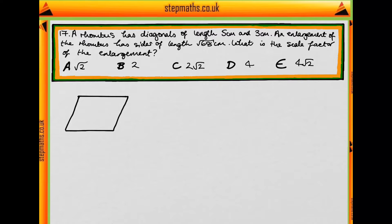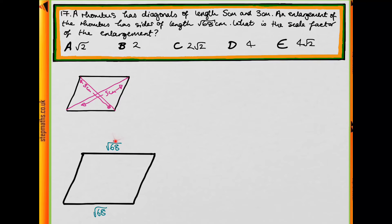So what this looks like: we have our rhombus, it has diagonals 3cm, 5cm and it's enlarged to something with side lengths of √68cm. These sides are the same as well.